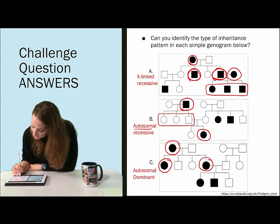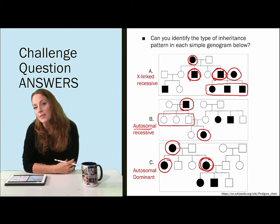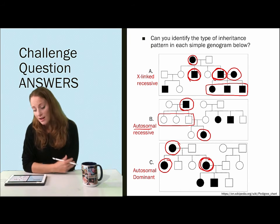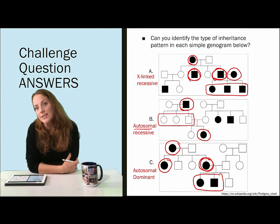From that, one of those female children ended up having a partner who was unaffected but two of her three children were affected.